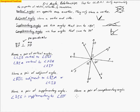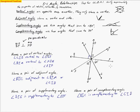Complementary angles add to make 90 degrees. Since BF and HD are perpendicular, we have a right angle here. I'm going to use angles BIC and CID. Angle BIC is complementary to angle CID. Those are both adjacent angles, but also special adjacent angles because they make a 90-degree angle — so we call them complementary angles.